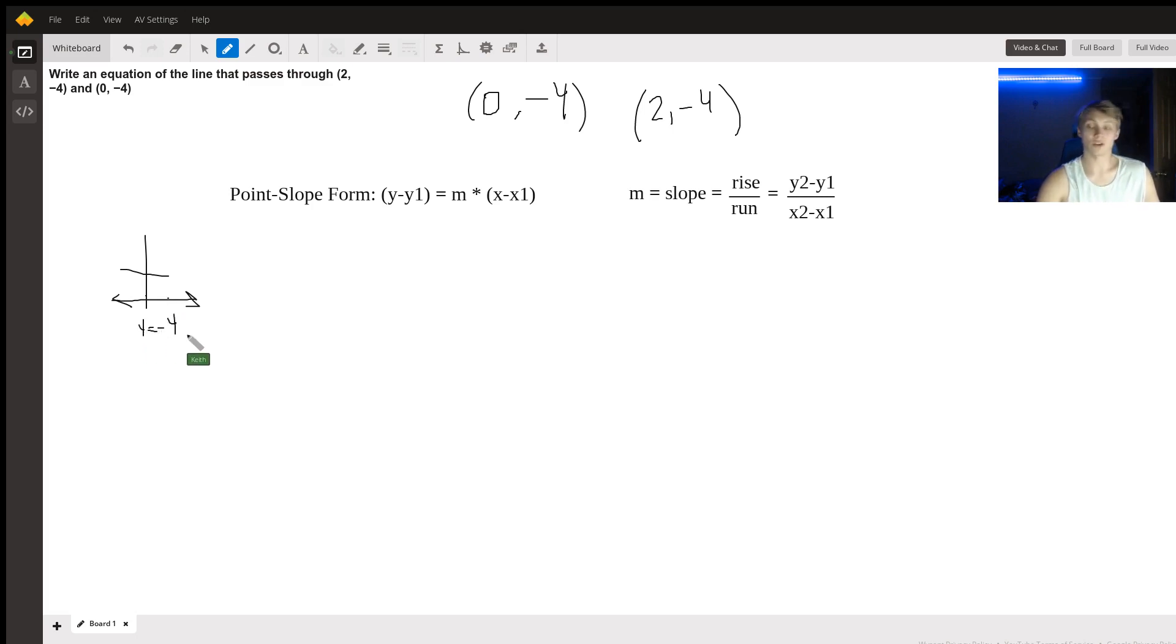But maybe you're not quite at that point yet. What is a way that you could approach every problem like this, maybe if the line has some slope or something? This one won't have any slope, or at least it'll have a slope of zero.